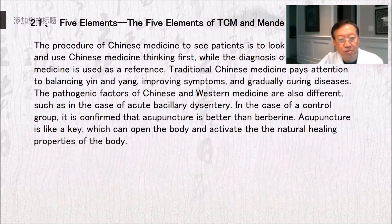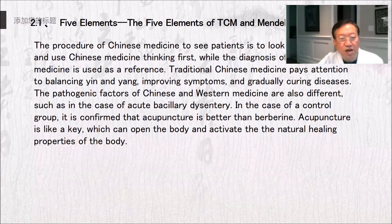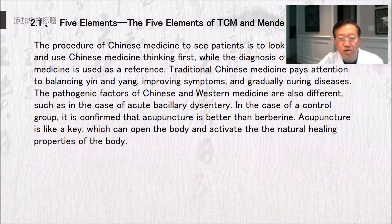The procedure of Chinese medicine to see patients is to look at people first and use Chinese medicine thinking first, while the diagnosis of Western medicine is used as a reference. Traditional Chinese medicine pays attention to the balancing of yin and yang, improving symptoms, and gradually curing diseases. The pathogenic factors of Chinese and Western medicine are also different — for example, in the case of acute bacillary dysentery, a control group confirmed that acupuncture is better than berberine. Acupuncture is like a key which can open the body and activate the natural healing properties of the body.